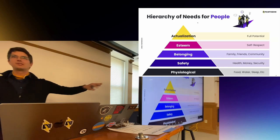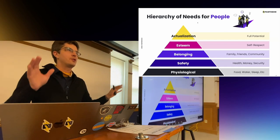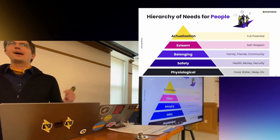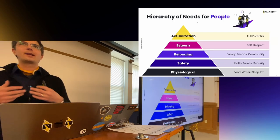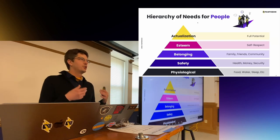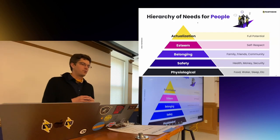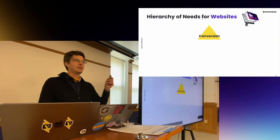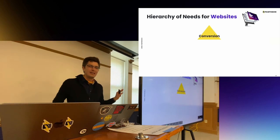Hierarchy of needs for people — an oversimplified, perhaps problematic way of looking at how we human beings organize our needs. At the baseline we have physiological needs: food, water, shelter. Above that, safety — financial security and health care. If those needs are satisfied, we can ask where we belong in society, amongst family, friends, and coworkers. Then, do we feel good about that place — do we have self-esteem? And then, perhaps ideally, we are reaching self-actualization. I think there's a comparison here with websites.